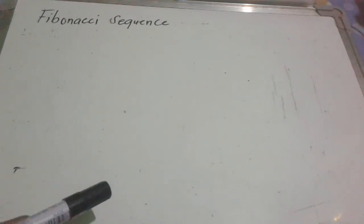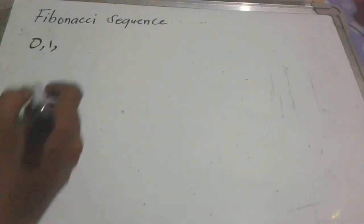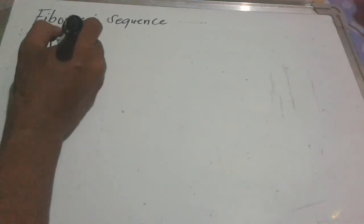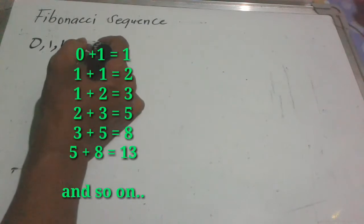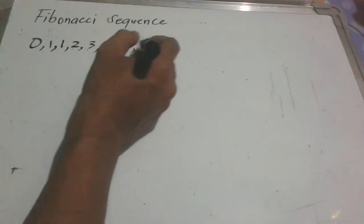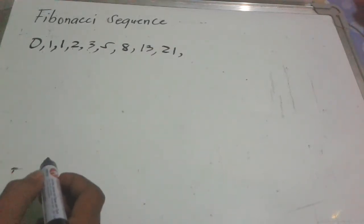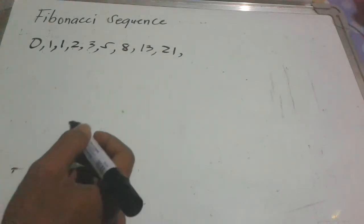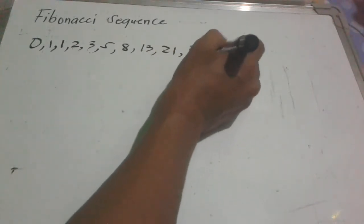The Fibonacci sequence starts with 0 and 1. To get the next term, we add the preceding two numbers. So: 0 plus 1 is 1, 1 plus 1 is 2, 1 plus 2 is 3, 2 plus 3 is 5, 3 plus 5 is 8, 5 plus 8 is 13, 8 plus 13 is 21, 13 plus 21 is 34, and 21 plus 34 is 55.